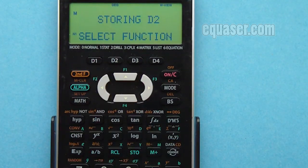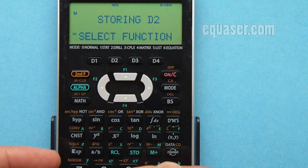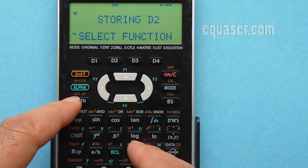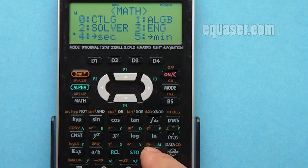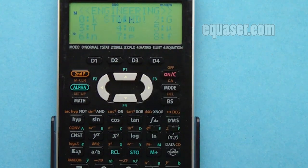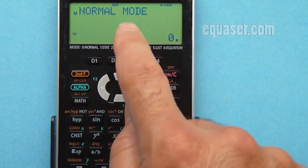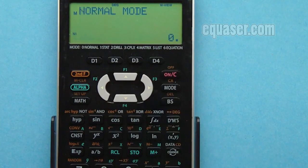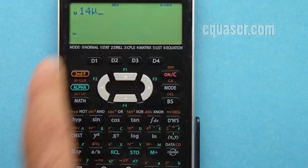Store D2. Now I'm going to select the function. Let's say math, three and five, which is micro.